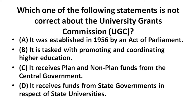The next question is: which one of the following statements is NOT correct about the UGC (University Grants Commission)? The options are: first, it was established in 1956 by an act of Parliament — this is correct. Second, it aims at promoting and coordinating higher education — this is correct. Third, it receives plan and non-plan funds from the central government — this is also correct. Since A, B, C are correct, the answer is D.